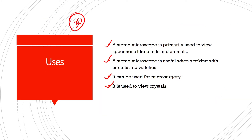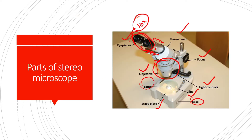A stereoscopic microscope is primarily used to view specimens like plants and animals. It is also useful when working with circuits and watches, and it can be used for microsurgery and viewing crystals.